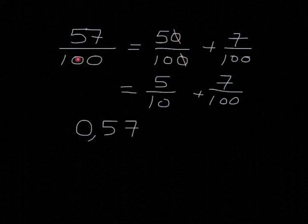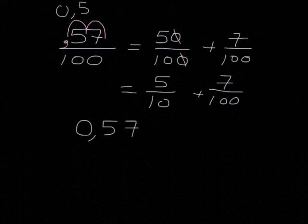you will see that there are two zeros in the denominator. This gives us the hint of how we can do the little trick. We start at the end and we just simply move two steps back and put the comma there. And that will tell us that the fraction, the decimal that it is equivalent to, is 0.57.